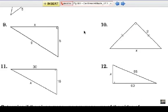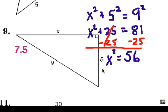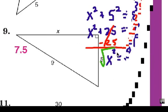Now, I want you to look at 9, 10, 11, and 12 and solve for X. We're going to use the Pythagorean Theorem. 56. Take the square root now of each side.